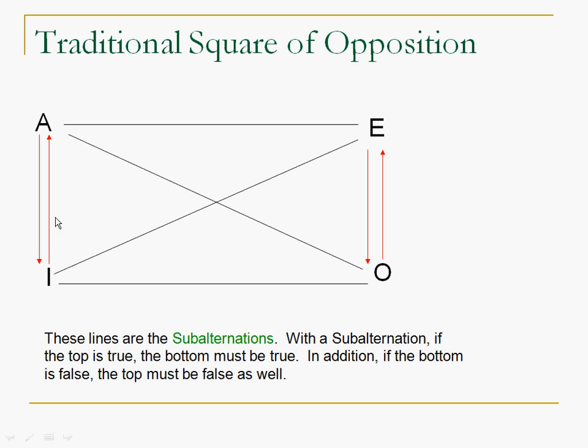Now, on the other hand, if I is false, A is going to be false. If O is false, E is going to be false. So, if we have a false I statement, then A is automatically false. Okay? If it's false that some dogs are cats, then it's going to be false that all dogs are cats. If it's false that some cats are not house pets, it's also going to be false that no cats are house pets.